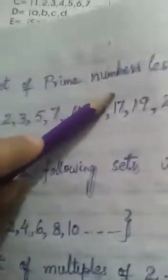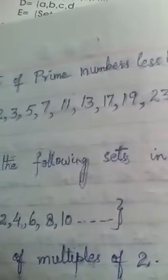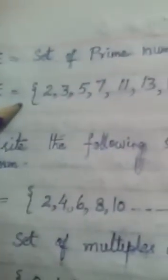E = set of prime numbers less than 30. As we know, prime numbers are numbers divisible by 1 and the number itself.